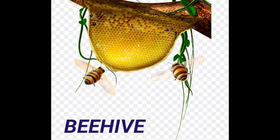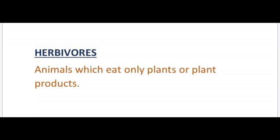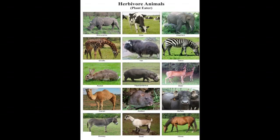Animals are classified into three types. The first type is herbivorous animals — herbivores are animals which eat only plants or plant products. Examples include cow, elephant, zebra, goat, horse, camel, rabbit, and buffalo — all herbivorous animals that eat only plants.